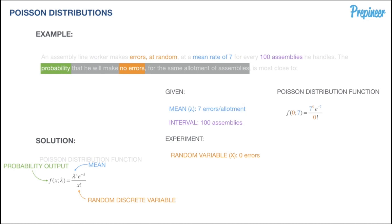We can plug in our variables. Our random variable is 0 errors, which I highlighted in orange in our formula directly from our NCES reference handbook. Then our mean is simply 7—that's lambda—we just plug 7 in.